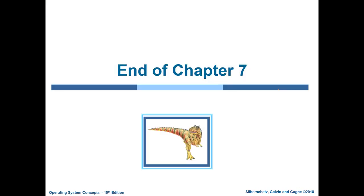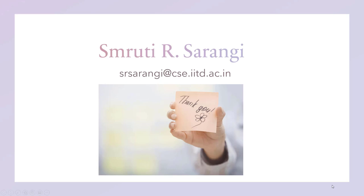This brings us to the end of chapter 7. We will discuss more about deadlocks in later chapters. Chapters 6 and 7 together have covered almost all aspects of synchronization, both from a theoretical side and a practical side, insofar as synchronization primitives and synchronization operations are concerned.